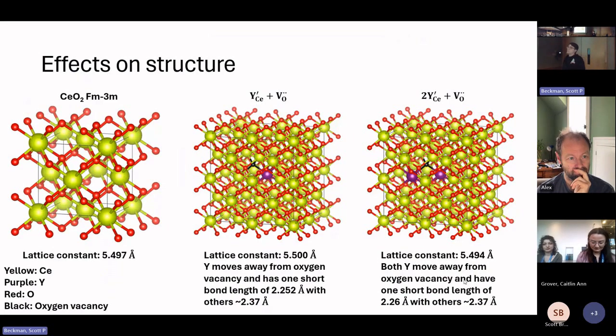What you see is that there ends up being one short yttrium-oxygen bond length of about 2.25 angstrom, and then the rest of them stay at about 2.37. In the pure yttria crystal, the bond length of the yttrium-oxygen is about 2.3. So you can see that there is a difference when you introduce this yttrium compared to the pure crystal.